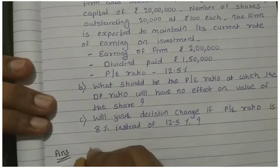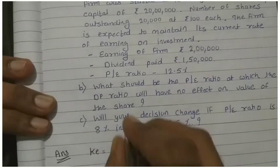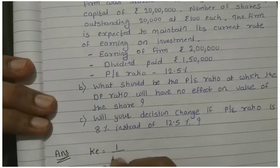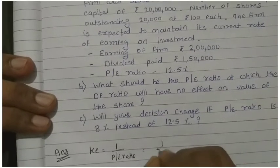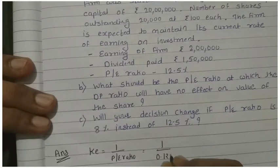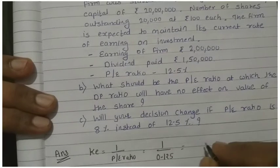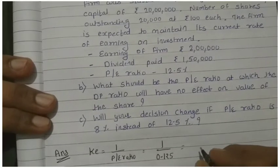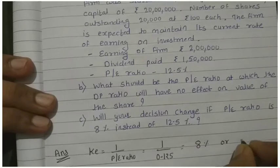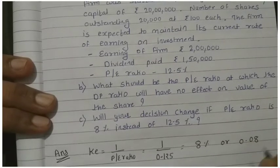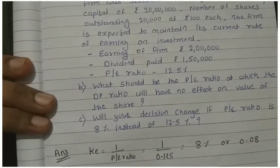First of all we need KE and R. So we find out KE because P/E ratio is given, so 1 upon P/E ratio. KE is 1 upon P/E ratio, which is 12.5% or 0.125. So 1 upon 0.125, the answer is 8 percentage or 0.08.